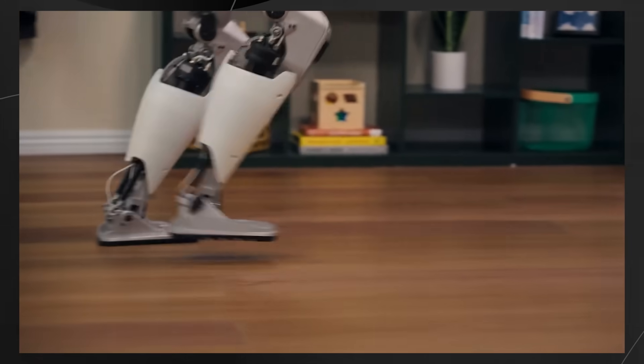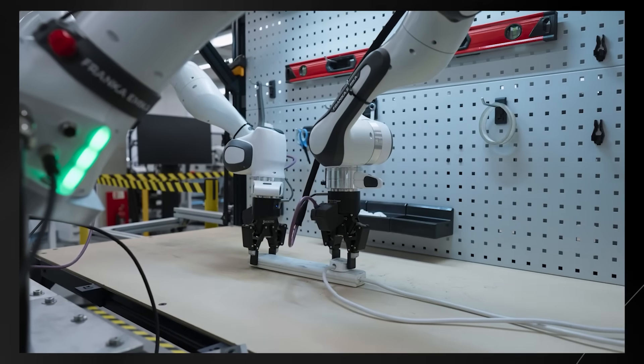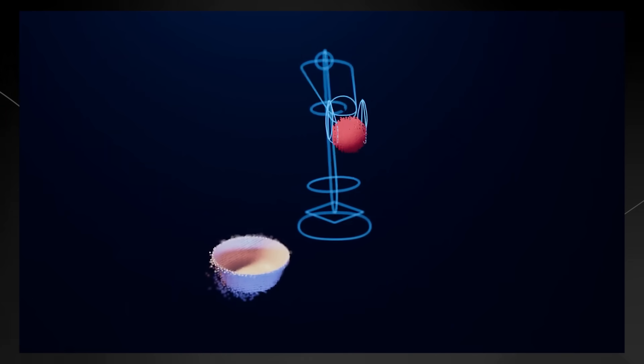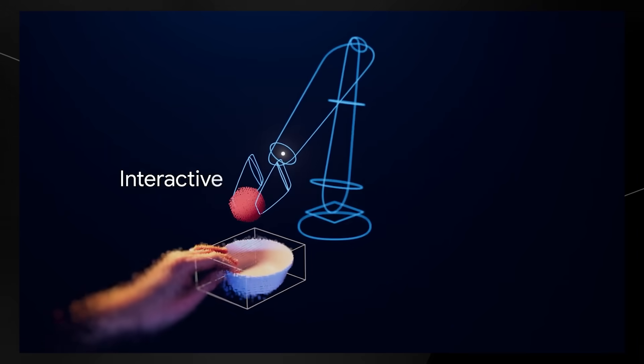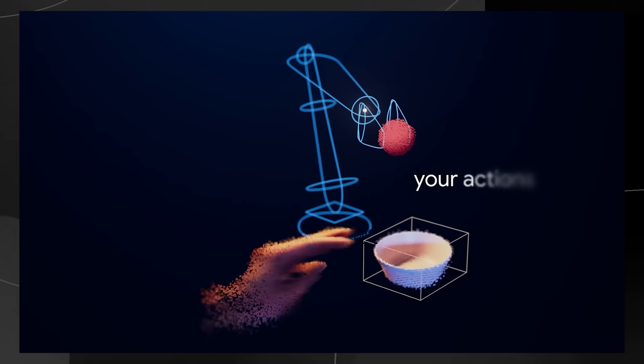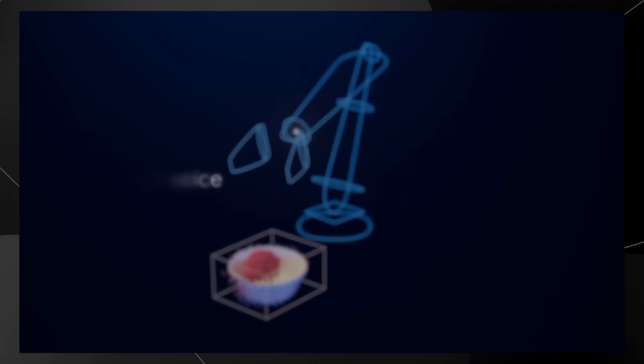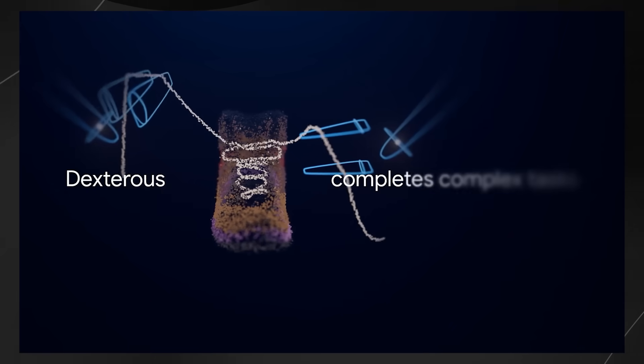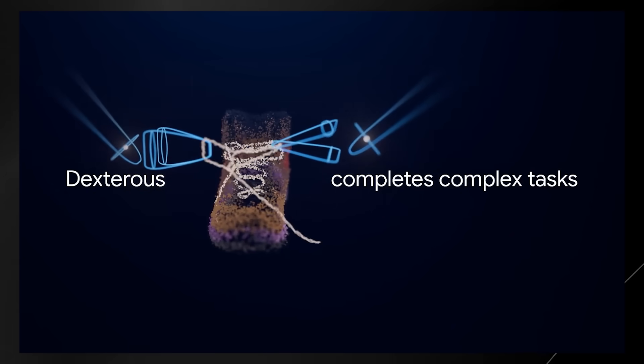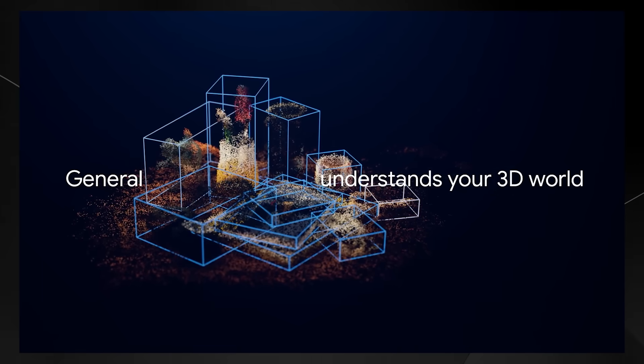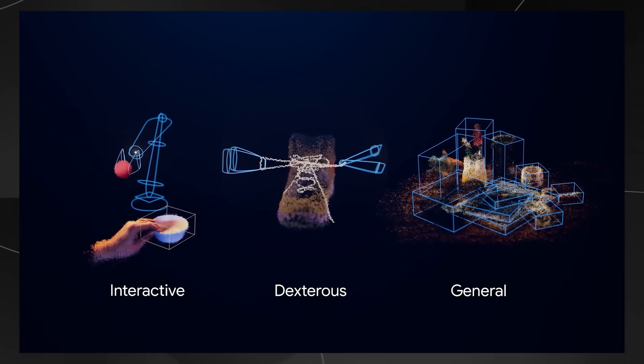We're bringing Gemini 2.0's intelligence to general purpose robotic agents in the physical world. To be helpful, robots need to be interactive, responding live to your actions and your voice. They need to be dexterous to complete your most complex tasks, and they need to be general to understand things in your 3D world. All of these capabilities need to work across different physical forms.